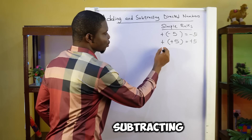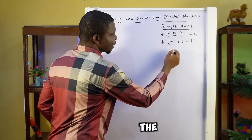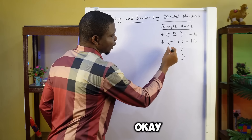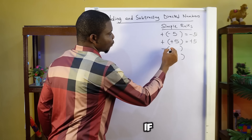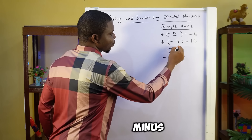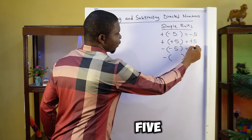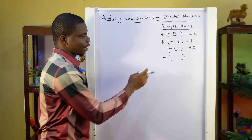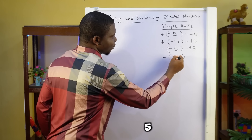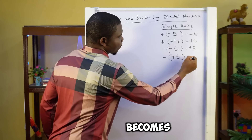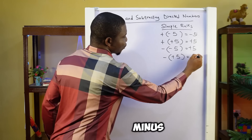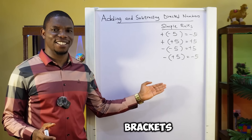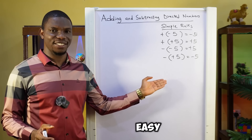But when subtracting, the signs change. So if we have minus 5, this becomes plus 5. If we have plus 5, this becomes minus 5. I think this rule about opening brackets is very easy, right?